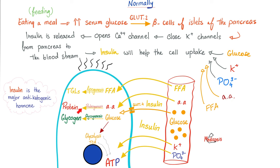Eat too much sugar and insulin will work harder to push all of that glucose inside, and you will end up becoming fat, literally. So, if I have too much insulin, what happens to my potassium level? All of the potassium will be hiding in the cell, leaving less potassium in the blood — hypokalemia. What if I have no insulin or insulin resistance? Then potassium is not pushed inside; it stays outside, causing hyperkalemia.